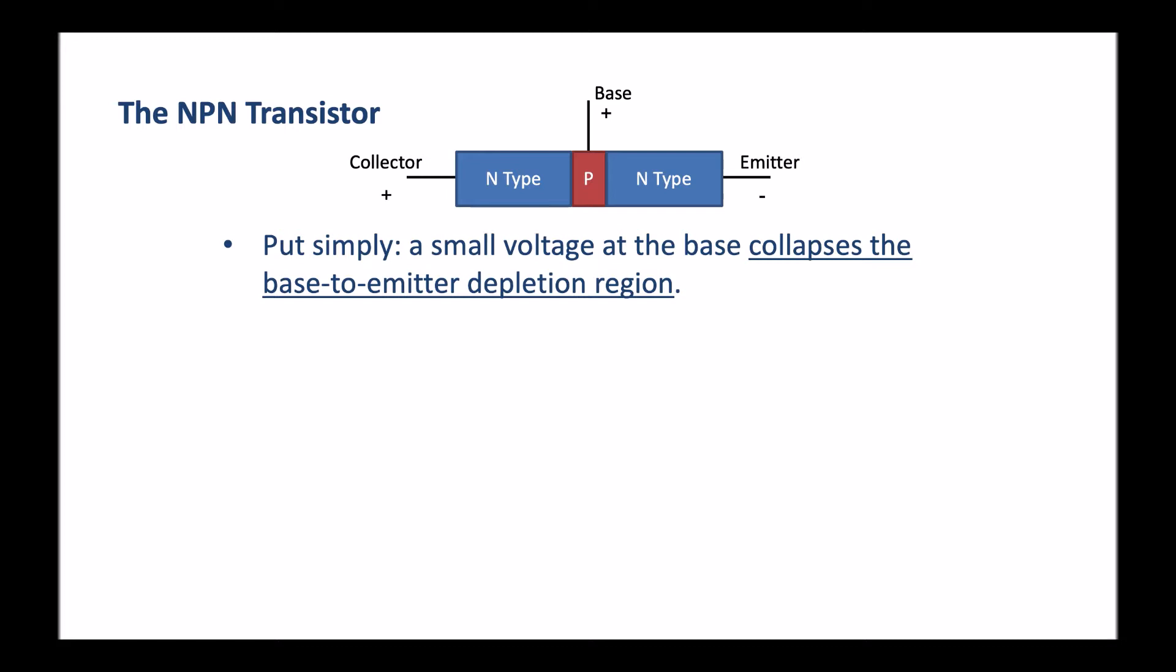Now we'll apply a small voltage at the base, and this will collapse the base to emitter depletion region. Because now we have a forward bias between the base and the emitter, a PN junction in forward bias, electrons are able to move freely between the base and the emitter.